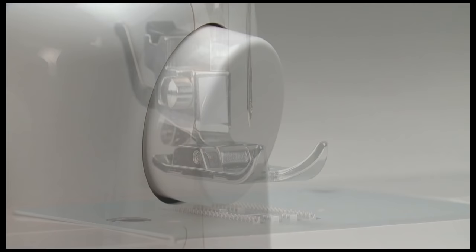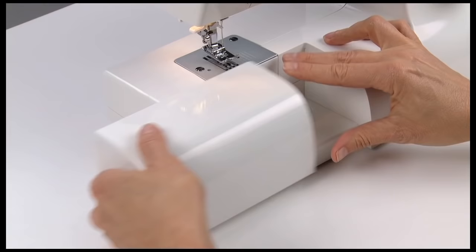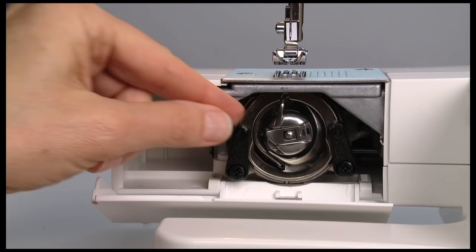To insert or remove a bobbin, make sure the needle is in its highest position by turning the handwheel toward you. Remove the extension table from the machine and then open the hinged cover. Pull the bobbin case tab and then remove the bobbin case.